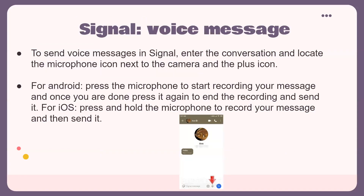To send voice messages in Signal, enter the conversation and locate the microphone icon, which is next to the camera and the plus icon as shown in the picture. For Android, press the microphone to start recording your message and press it again once you are done to end the recording and send it. For iOS, press and hold the microphone to record your message, and once you let go it will send.